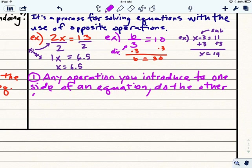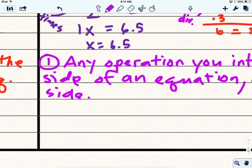You have to keep it in balance. Equations have an equal sign that means things are the same. So, you have to do things the same to both sides.